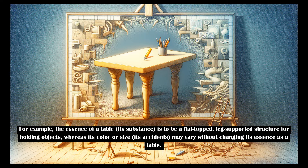For example, the essence of a table — its substance — is to be a flat-topped, leg-supported structure for holding objects, whereas its color or size, its accidents, may vary without changing its essence as a table.